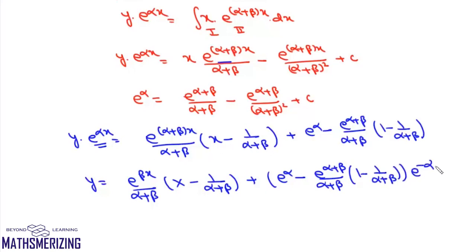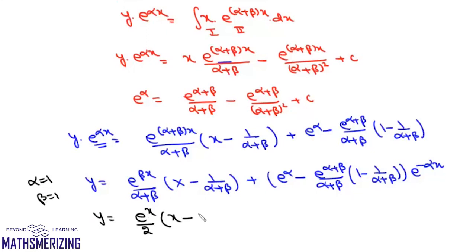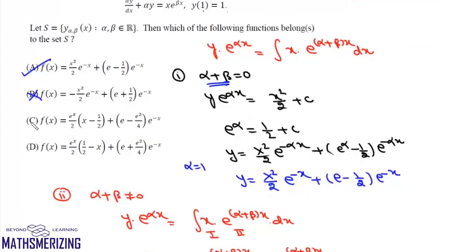To check option C, we need e^x/2, so we put alpha = 1 and beta = 1. Substituting gives y = e^x/2·(x - 1/2) + (e - e²)·(1/2)·(1/2)·e^(-x), which simplifies to e^x/2·(x - 1/2) + (e² /4)·e^(-x). This matches option C. So the correct options are A and C.